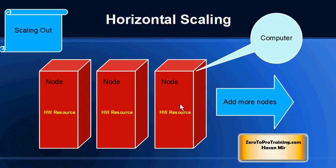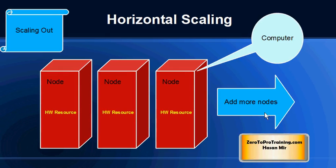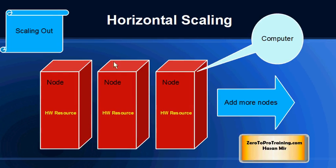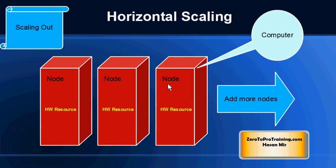Horizontal scaling, on the other hand, means rather than making a node more powerful, you add another node. You keep on adding more and more nodes as you need more and more power. The term 'scaling out' is also used for horizontal scaling. There is usually a linear correlation between the number of computers and performance — so to process 2x the data, you double your computers.